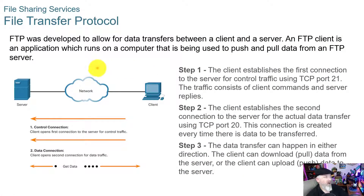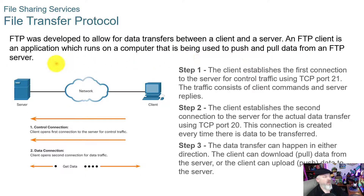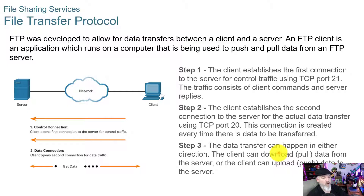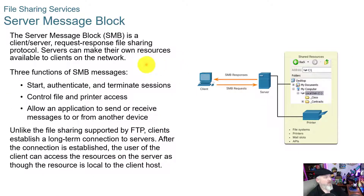File Transfer Protocol — FTP — was developed to allow data transfers between a client and a server. An FTP client is an application which runs on a computer and is used to push and pull data from an FTP server. In step one, the client establishes a control connection on TCP port 21. In step two, the client establishes a second connection to the server for the actual data transfer using TCP port 20, and then the data transfer occurs.